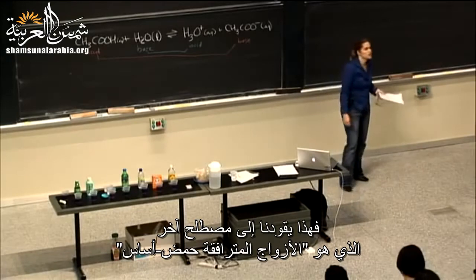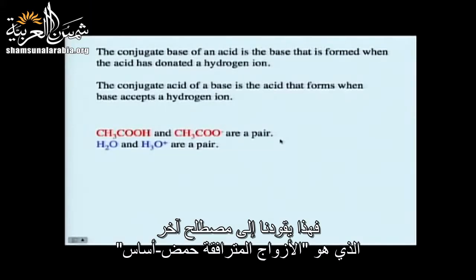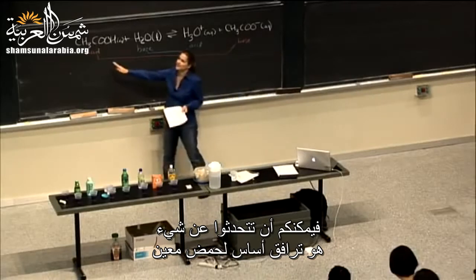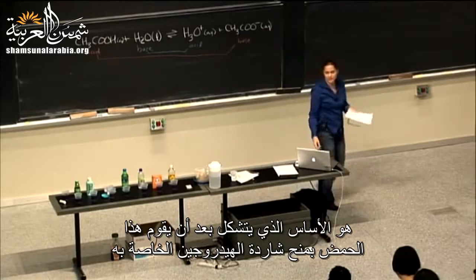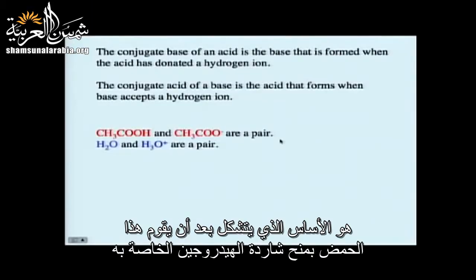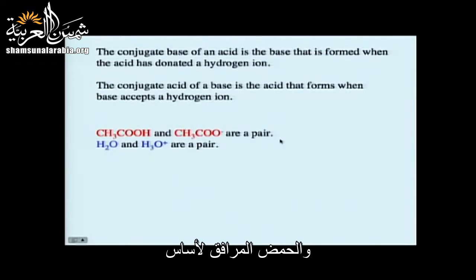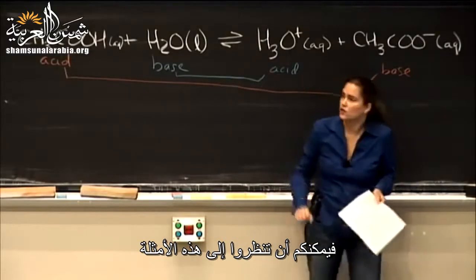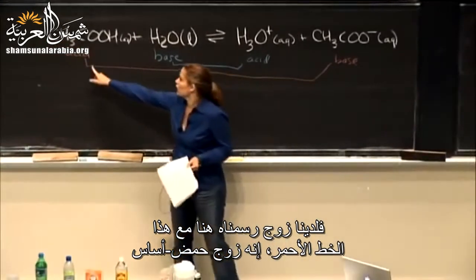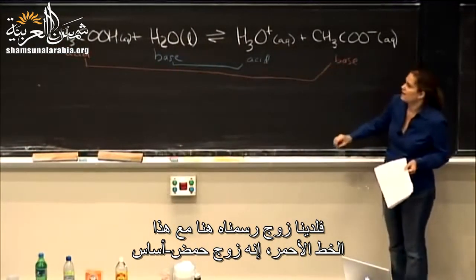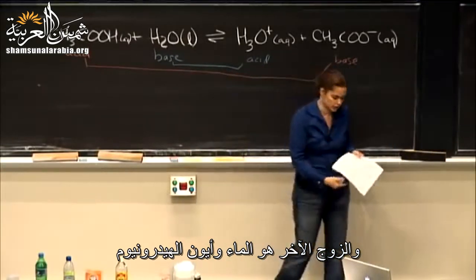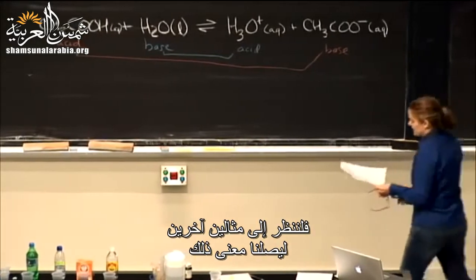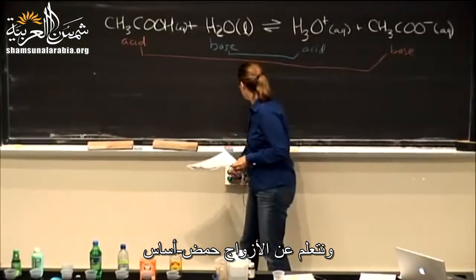This brings us to conjugate acid-base pairs. A conjugate base of an acid is the base formed after the acid has donated its hydrogen ion. A conjugate acid of a base is the acid formed when the base accepts the hydrogen ion. So we have one pair drawn here — the acid and its conjugate base — and the other pair is the water and the hydronium ion.